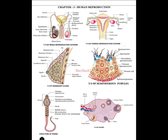From Chapter 3, Human Reproduction, you have to practice a lot — mainly the male reproductive system, female reproductive system, TS of mammary gland, TS of seminiferous tubules, structure of sperm, and TS of ovary. All these are asked as direct questions for five marks: draw a neat labelled diagram.